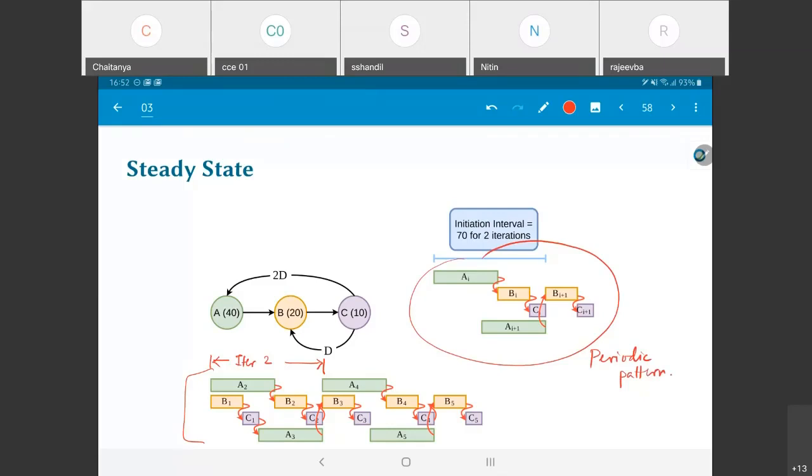And the periodic pattern is such that I can actually repeat after this interval, what I have shown with the blue line. And that interval is called the initiation interval in this case. And what we can see is that that number is equal to 70, but for two iterations. So effectively, in other words, I am able to run two iterations of this entire data flow graph every 70 time units. Effectively, the average iteration interval can be said to be 70 by 2 equal to 35.